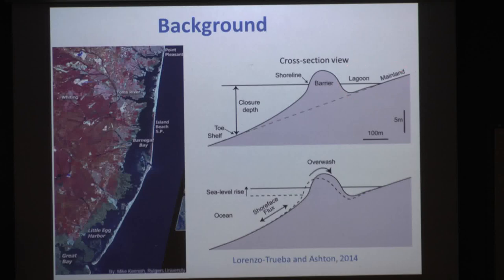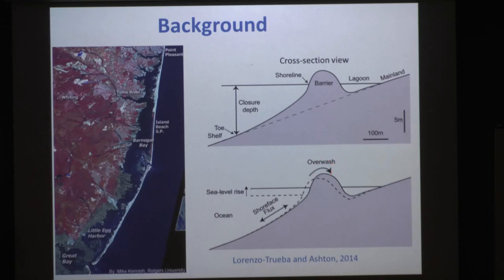We have the back barrier environment, which typically comprises a marsh and a lagoon. Barriers are able to keep pace with sea level primarily via storm overwash, which is the extraction of sediments from the front of the barrier and their deposition on top and in the back.